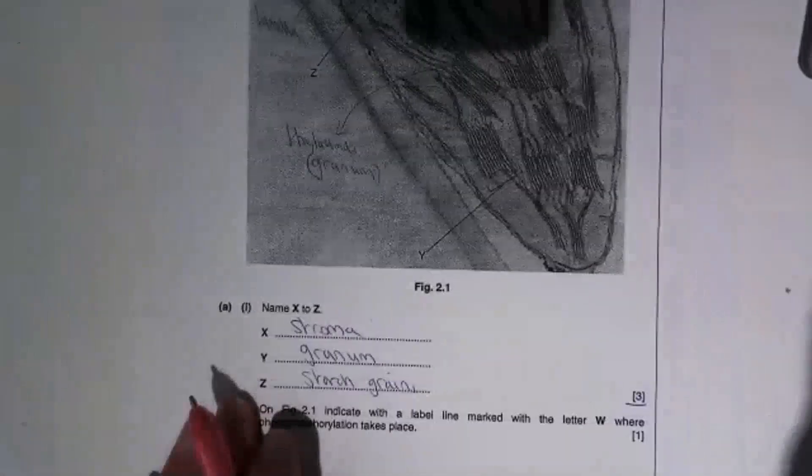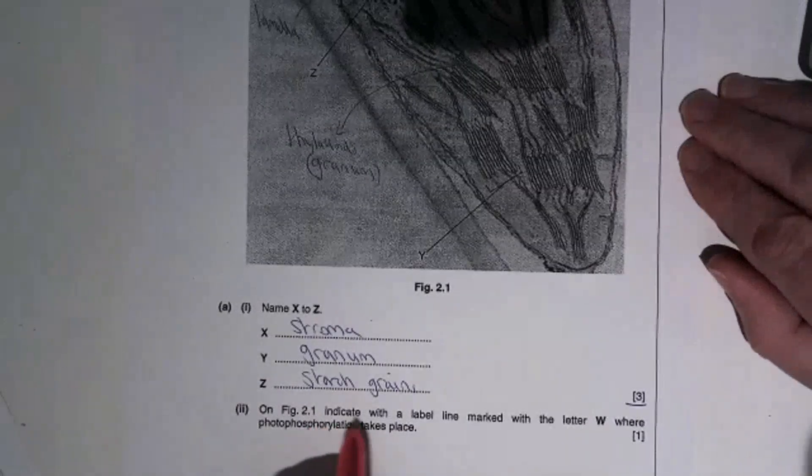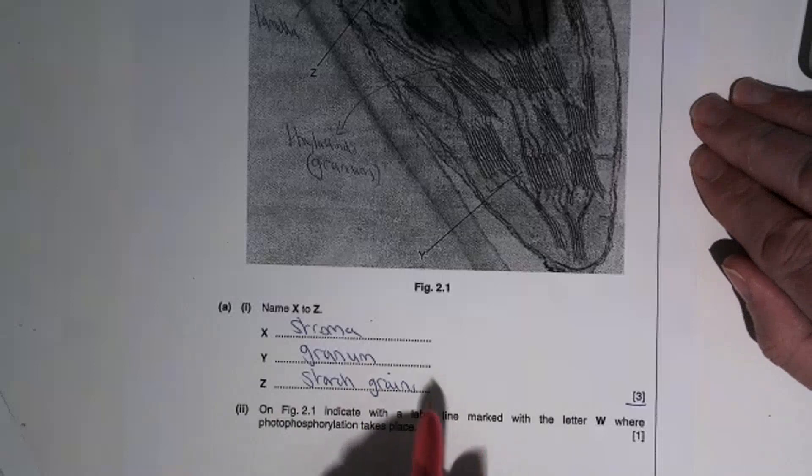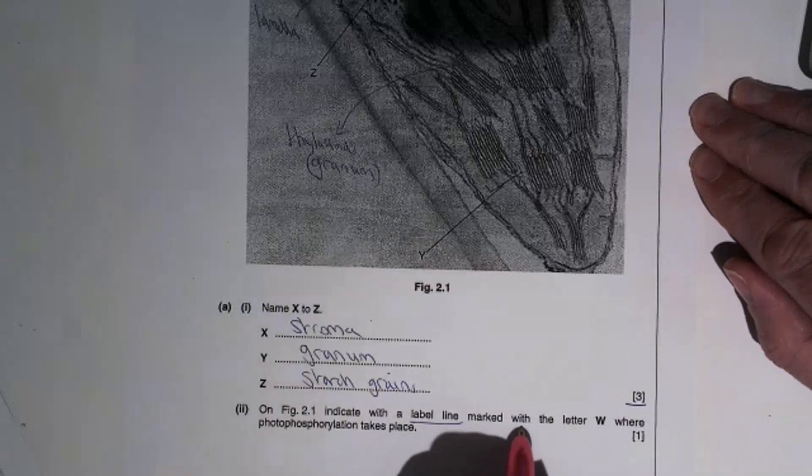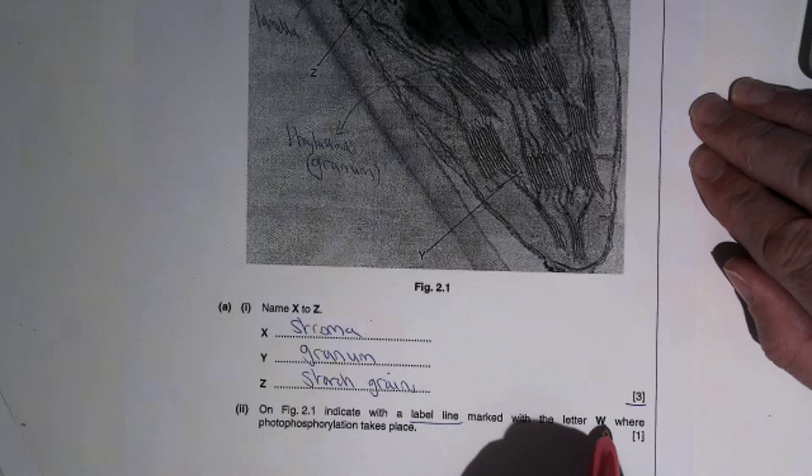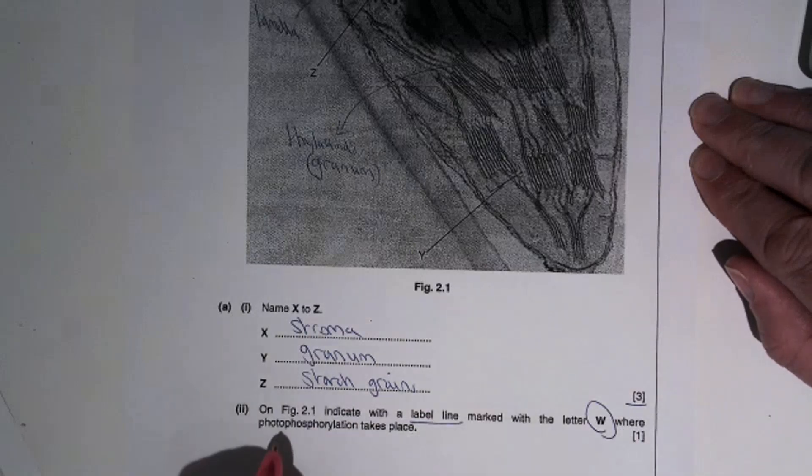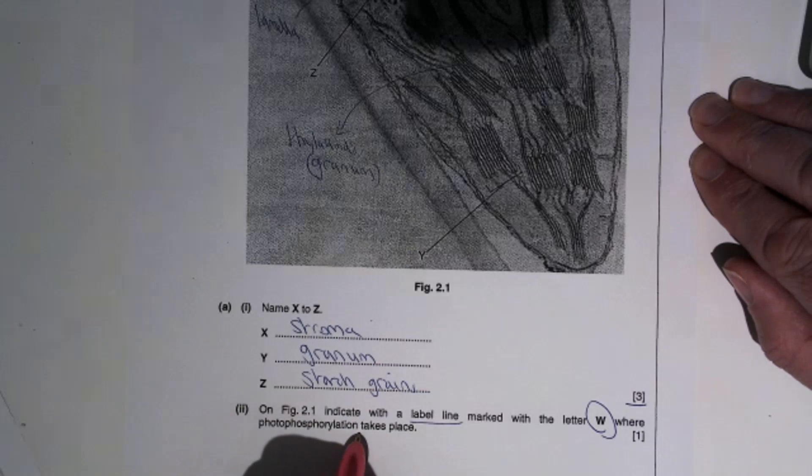Final part of this question says on Figure 2.1 indicate with a label line, so it's a straight ruled line with the letter W, where photophosphorylation takes place.